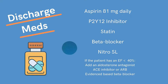Now if the patient has an ejection fraction less than 40%, then add an aldosterone antagonist such as spironolactone. They will also need an ACE inhibitor or ARB and a beta blocker that is evidence-based. Those evidence-based beta blockers are metoprolol succinate, carvedilol, and bisoprolol.